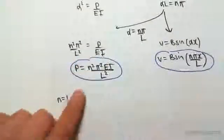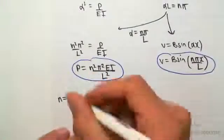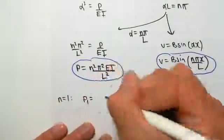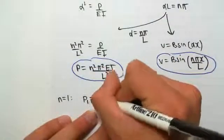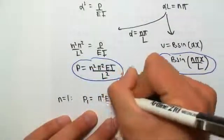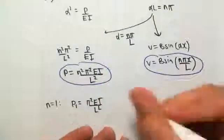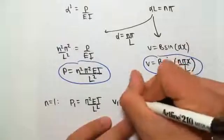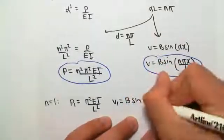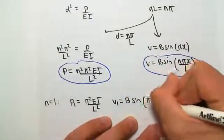For n equals 1, subbing in 1, we would have p subscript 1 equals n squared, which is 1 squared, which is just 1. So we'd have pi squared EI on L squared, and we would have v1, so subbing in n equals 1 here, we would have B sine n is 1, so pi x on L.